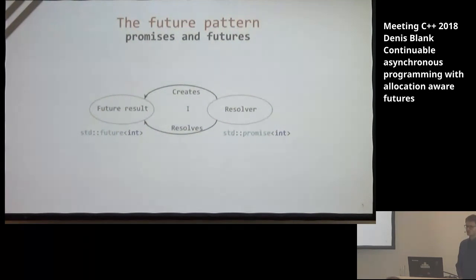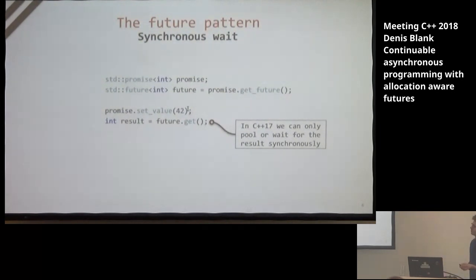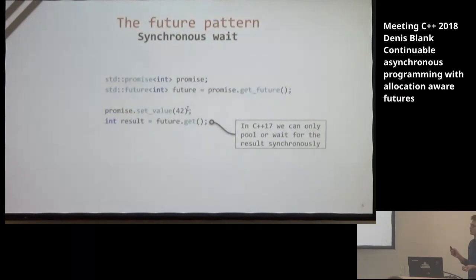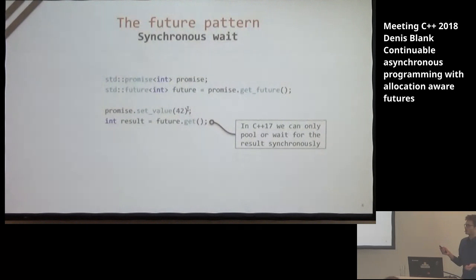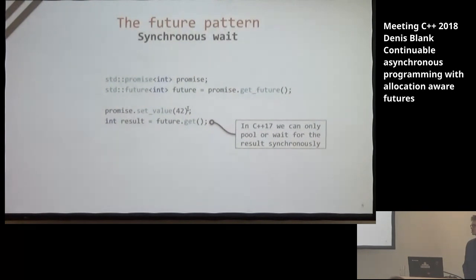The promise can create a future and resolve it. Usually you're using std::future like this: you create the future from the promise, then you set the value through promise.set_value, and then you're waiting for the future in a synchronous manner. In C++17 we can only do this, which is obviously bad because it will block the current thread, and threads are quite expensive.